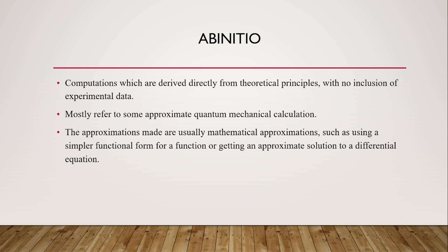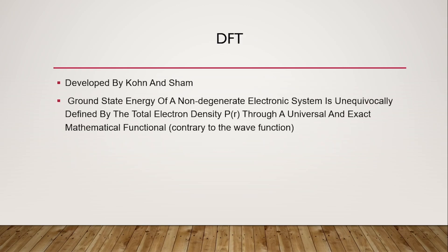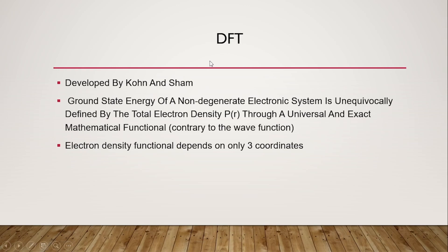The DFT method is an extension or simplified version of the ab initio method. In ab initio, we use the Schrödinger wave equation and the wave function psi to calculate the properties of the system, whereas in DFT we use the electron density functional. In ab initio, if there are N atoms in the system, you require 3N coordinates — that is three coordinates x, y, and z for each particle.